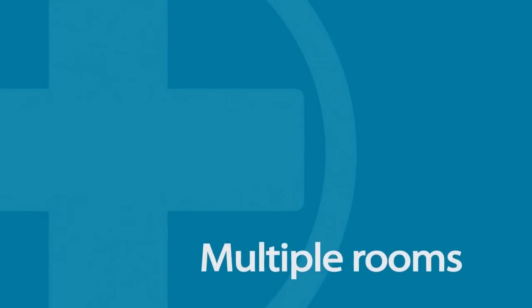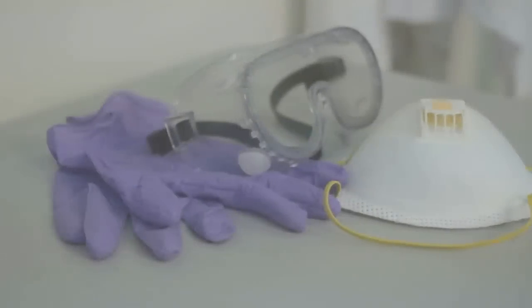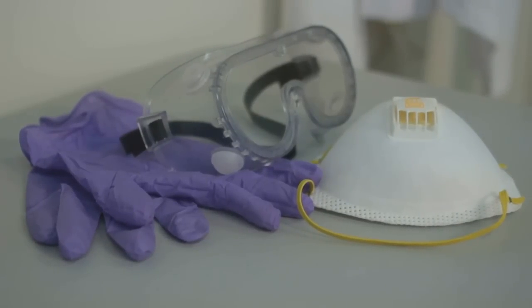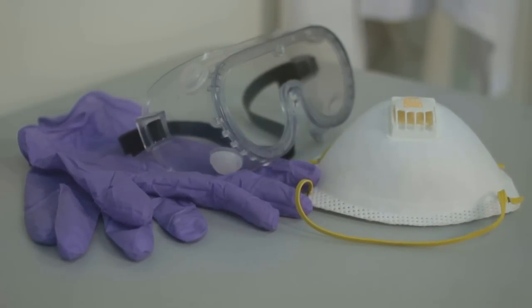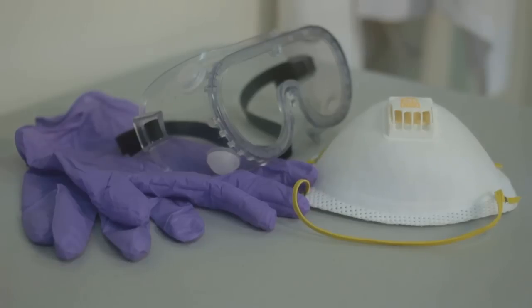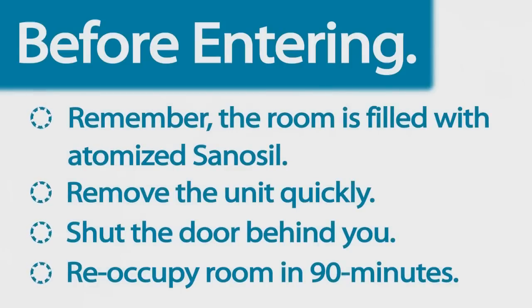When treating multiple rooms with one Halo Fogger, the unit can be removed after the dispensing cycle is complete. Before entering the room, proper personal protection equipment should be put on, including wraparound style goggles, an N95 respirator mask or better, and gloves. Remember to close the door upon exiting.